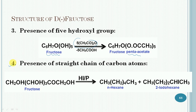Next is the presence of a straight chain of carbon atoms. On reduction with concentrated hydroiodic acid and red phosphorus at 373 Kelvin, fructose yields n-hexane. This shows that the 6 carbon atoms in fructose are arranged in a straight chain.